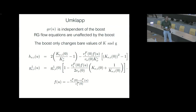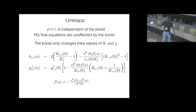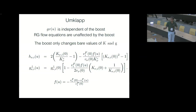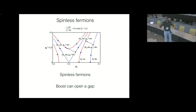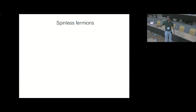It turns out that the RG flow equations are unaffected by the boost — all that happens is that the initial bare values change. Long story short, for spinless fermions a boost can actually open a gap: by applying a boost you can take a point which is on one side of the separatrix in terms of bare parameters to the other side and open a gap.